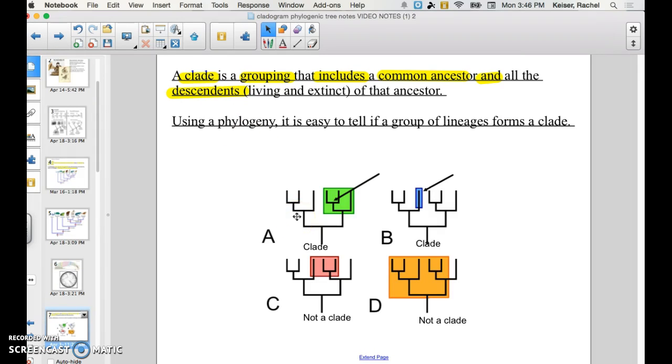And so when we're reading cladograms, we read and we study clads or clades. A clade is a grouping and it includes a common ancestor and all of its descendants. And so I would draw an example of what a clade is and also what a clade is not. For instance, this one down here is not a clade because this branch over here does not share the most recent common ancestor to this branch over here. And so that is not a correct clade.